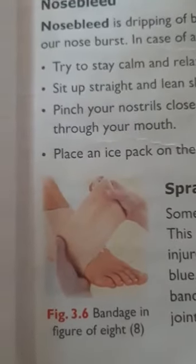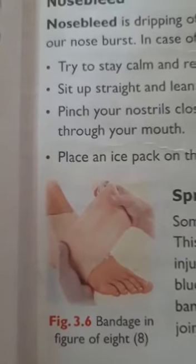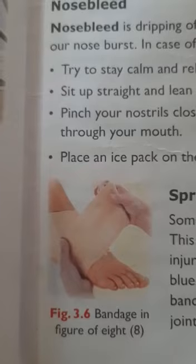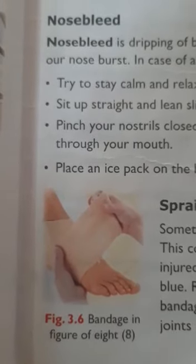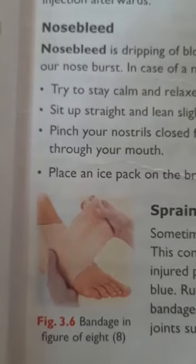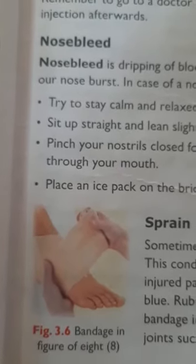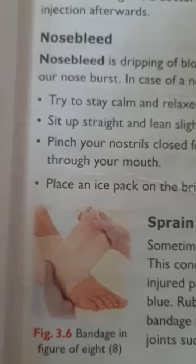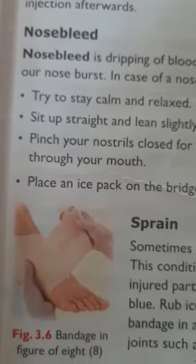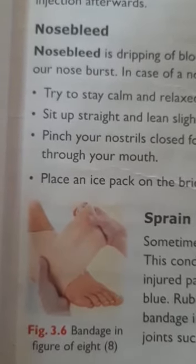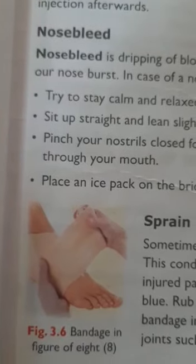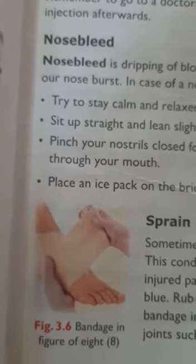Now we will see first aid in case of sprain. Sometimes we accidentally twist a joint, resulting in torn ligaments — this condition is called a sprain. Sprains can be very painful; the injured part swells up and sometimes the skin of the area turns blue. In this situation, rub ice on the swelling till it becomes less. For support, tie a bandage, which allows maximum movement of joints such as elbow, knee, wrist, or ankle.